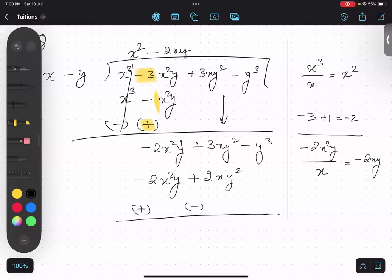First we will get cancelled. And over here plus 3 minus 2. What will I get? I will be getting 1xy². This will get down.